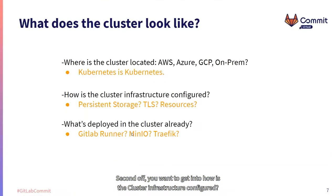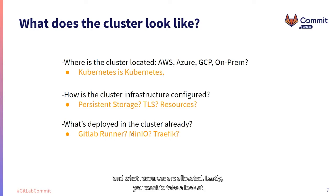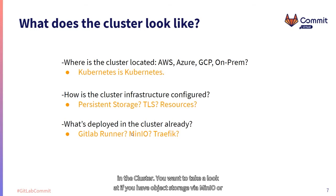For how the cluster infrastructure is configured, you want to take a look at persistent storage, TLS, and what resources are allocated. Lastly, you want to look at whether GitLab Runner is installed in the cluster, whether you have objects stored via MinIO, and whether Traefik versus Nginx is deployed in the cluster already.